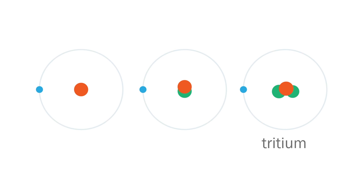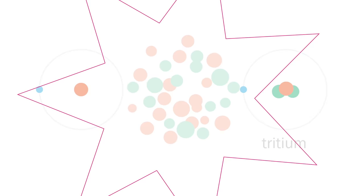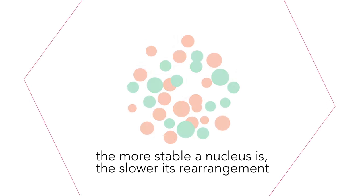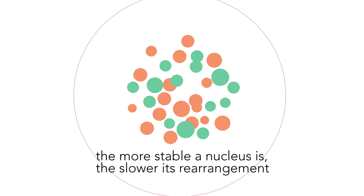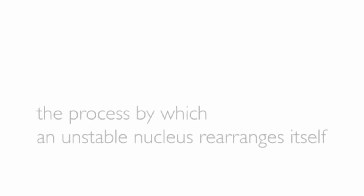The more unstable a nucleus, the faster it will try to rearrange itself into a more stable state. And another name for this process is radioactive decay.